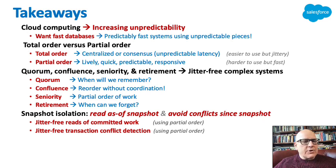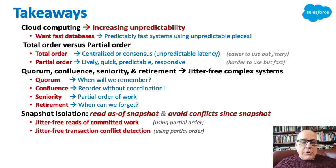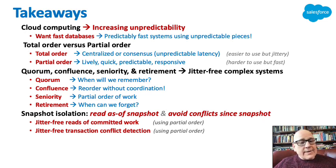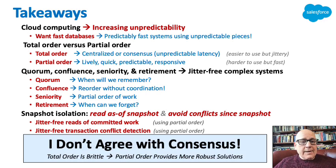Snapshot isolation is reading as of a snapshot and avoiding conflicts since the snapshot. We can get jitter-free reads of committed work with partial order, and jitter-free transaction conflict detection with partial order. I don't agree with consensus — total order is brittle. Partial order provides more robust solutions.